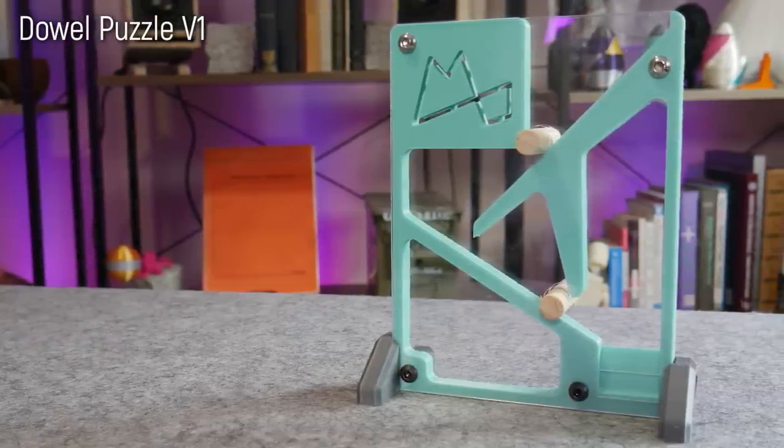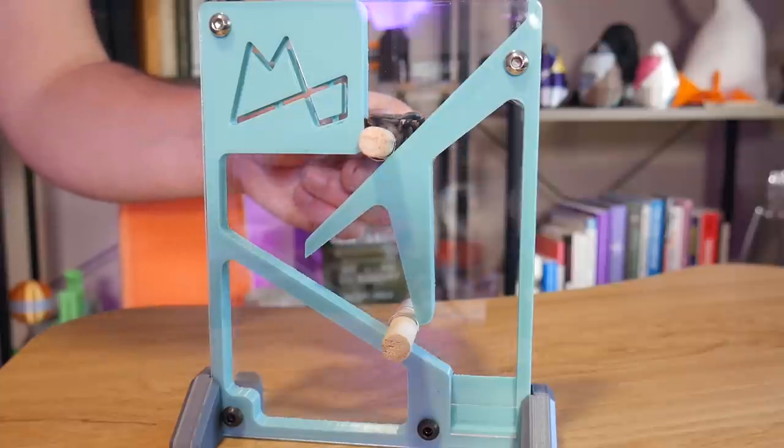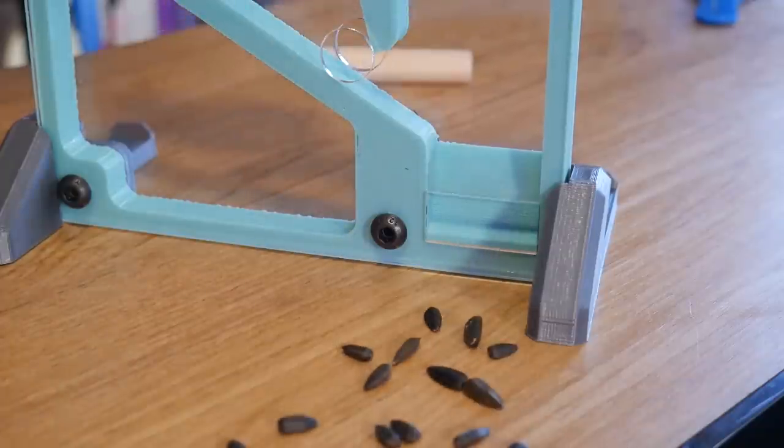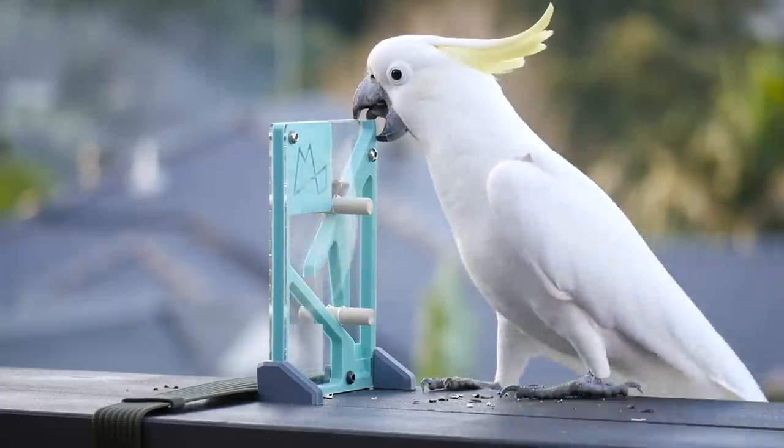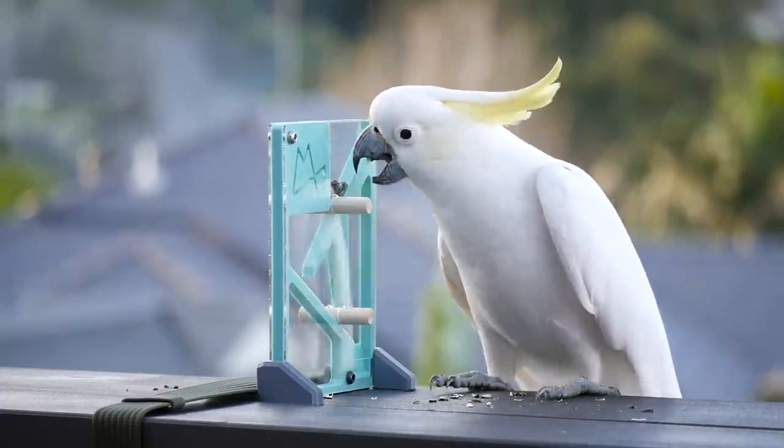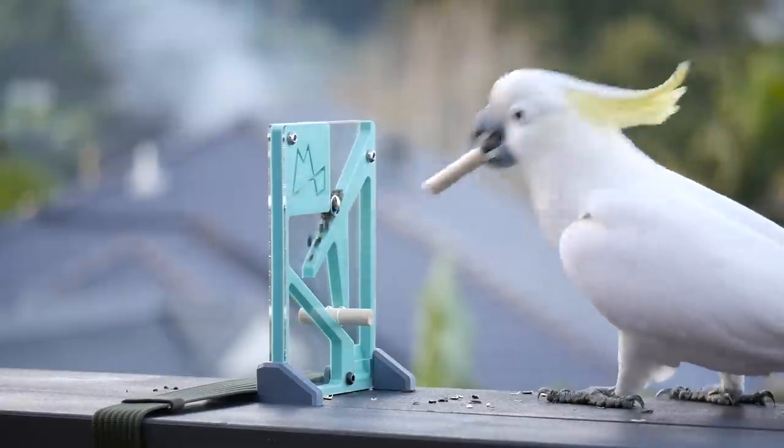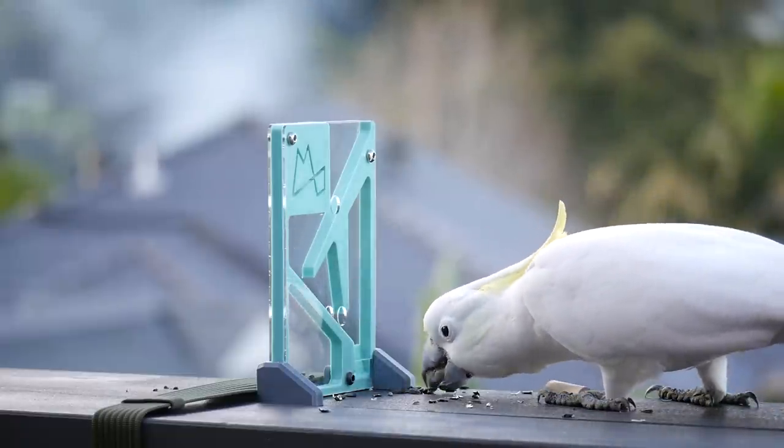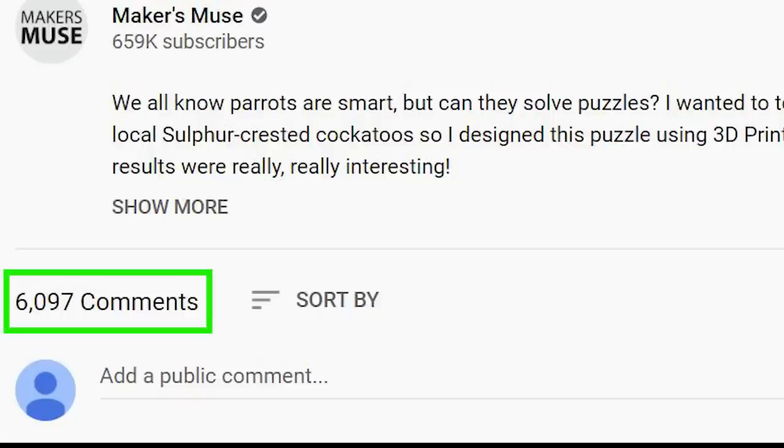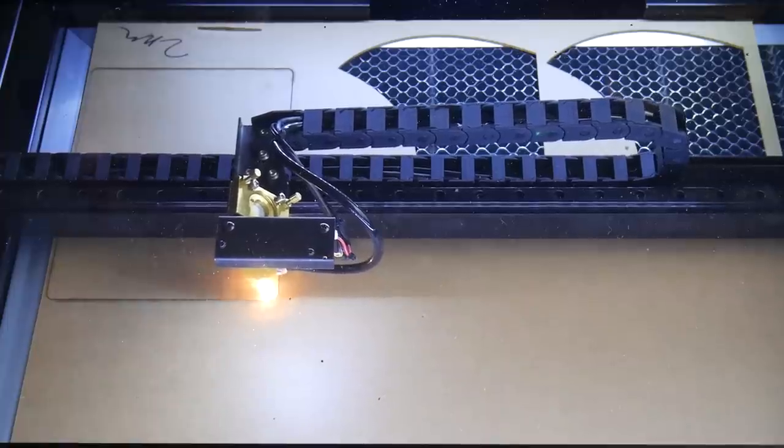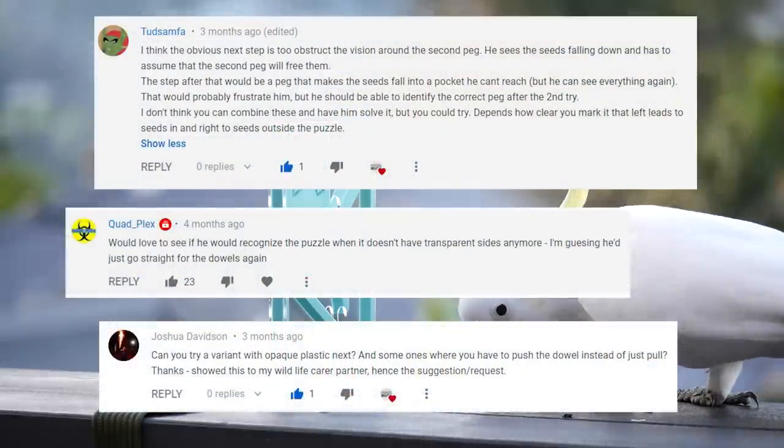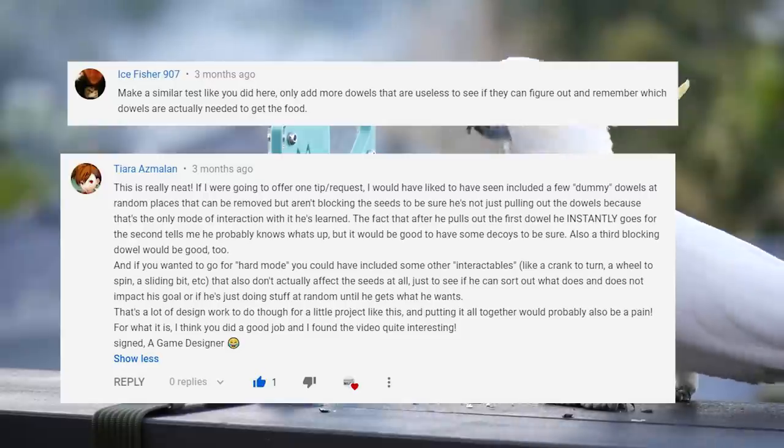To recap, this is the puzzle from the first video. Seed is placed in the top and held in place by a series of dowels. As they're removed, the seeds flow down a path to an opening at the bottom. It's very visual with transparent covers and Popeye, as well as another visiting cockatoo on another occasion, solved it relatively quickly once they realized it meant the promise of a reward. Now you guys had tons of great suggestions on how to modify this puzzle to make it more challenging. My favorites were these: number one, try obscuring the path and seeds and see how the birds react. Number two, what happens if you add additional superfluous dowels?